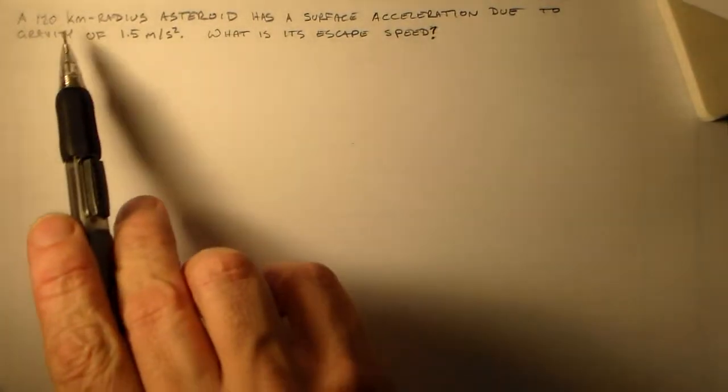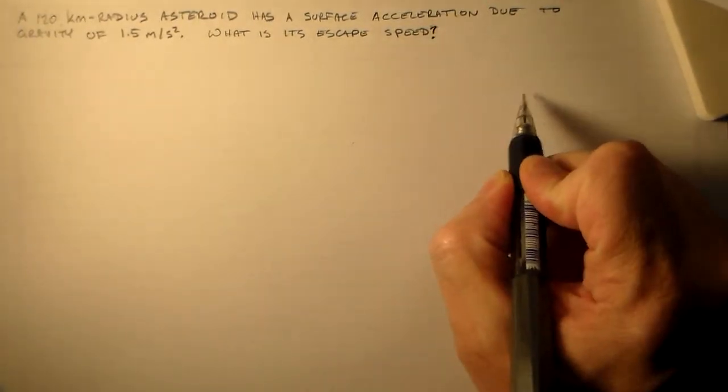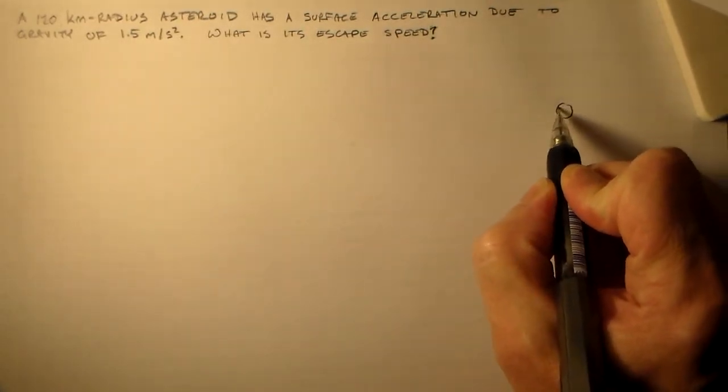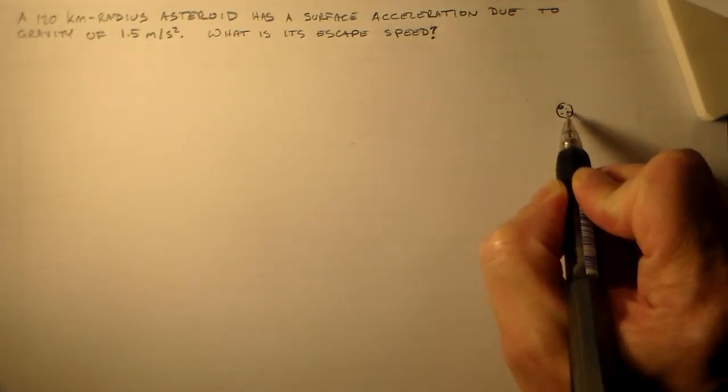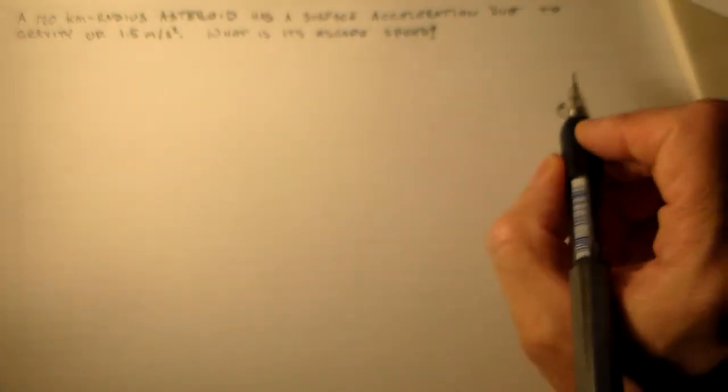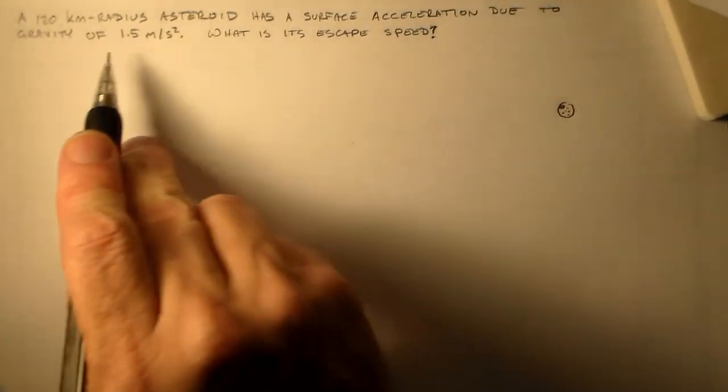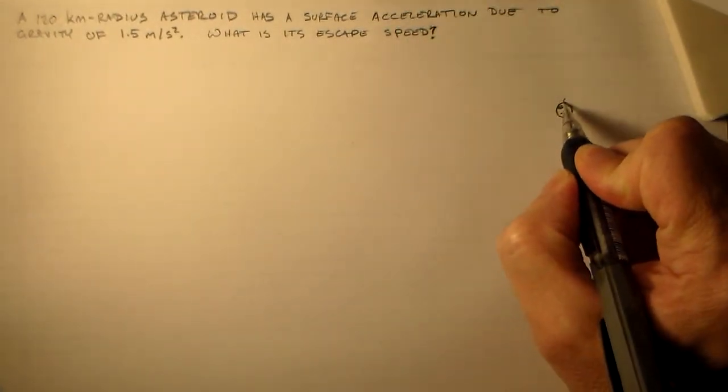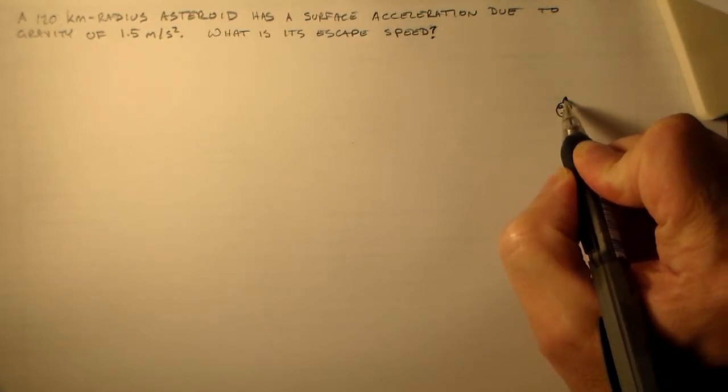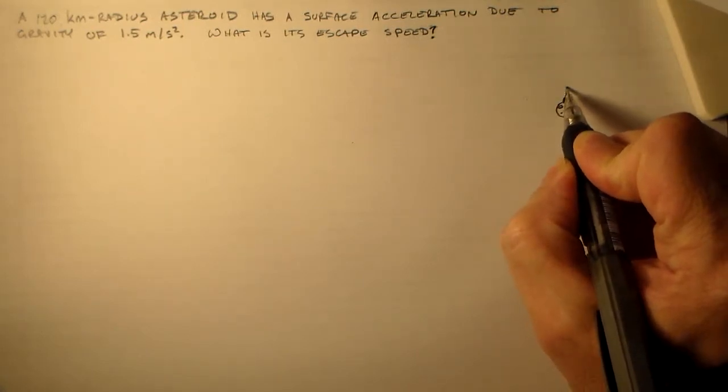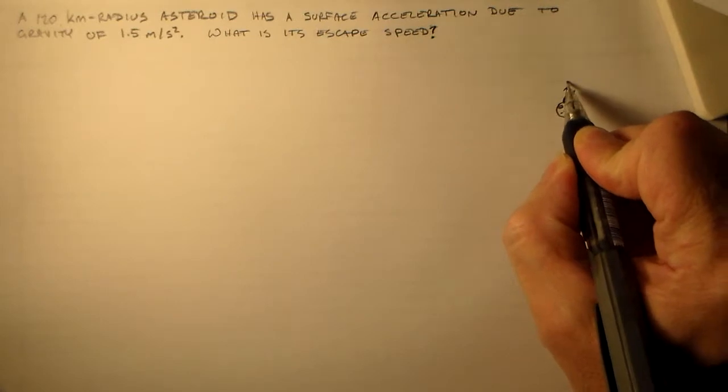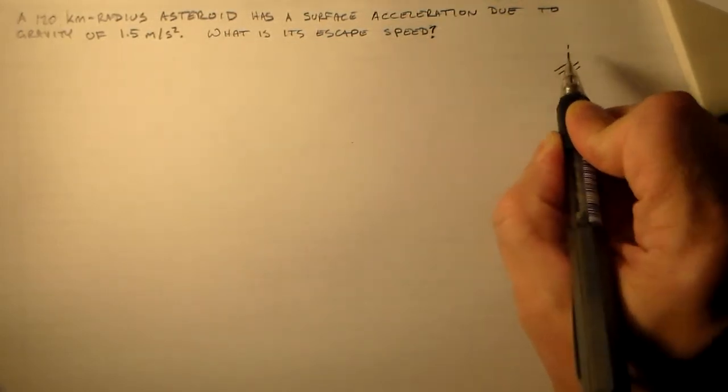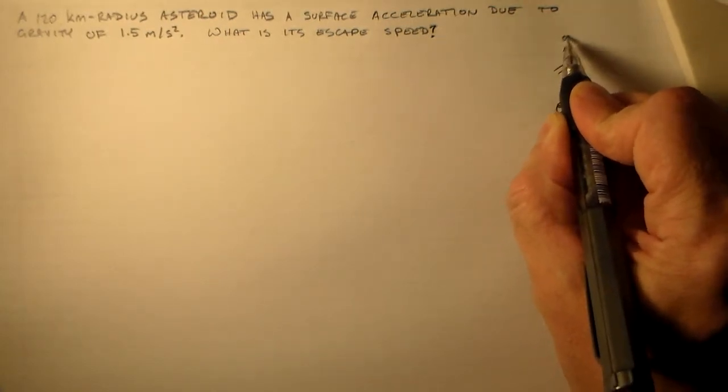All right, here's a nice simple one. I've got a 120-kilometer radius asteroid. So let me draw a little asteroid over here. And it has a surface acceleration of gravity of 1.5 meters per second squared. And I want to know what its escape speed is. So if I had an object and it was moving at some speed v, what would get it all the way up here to infinity, right?